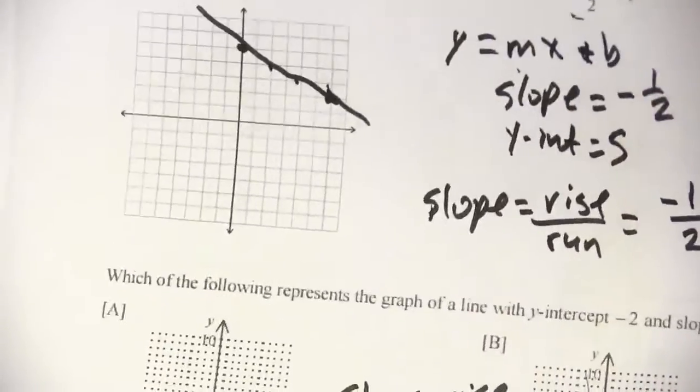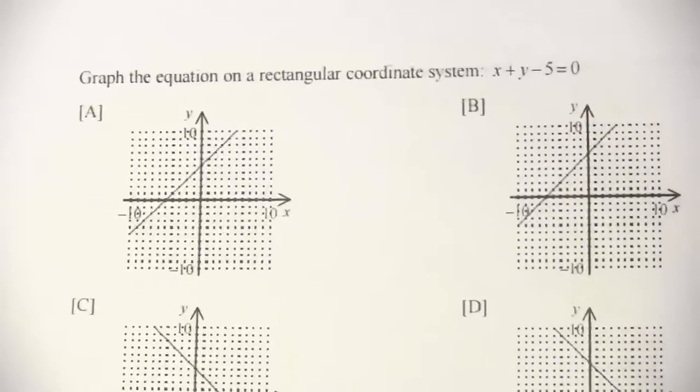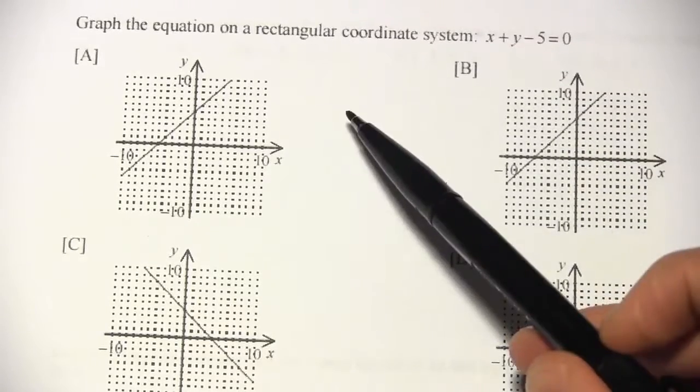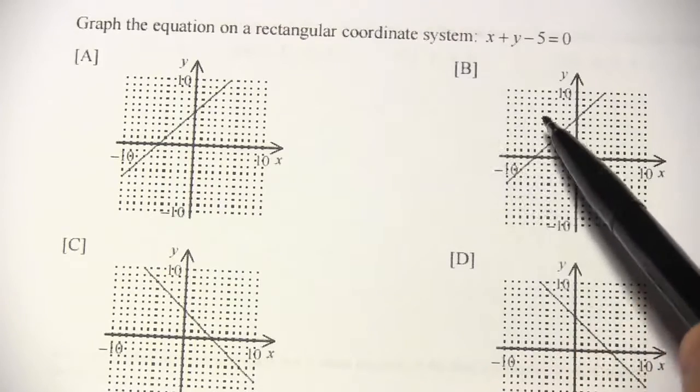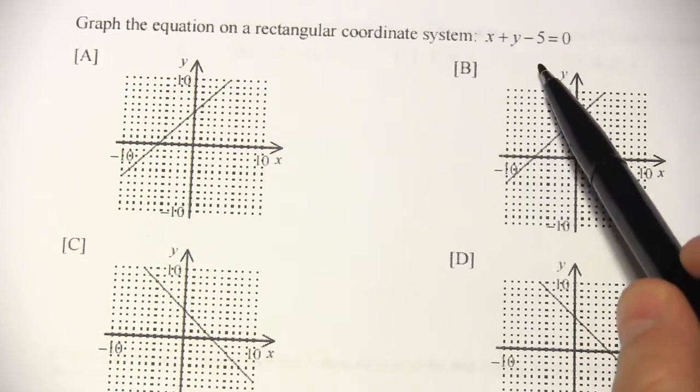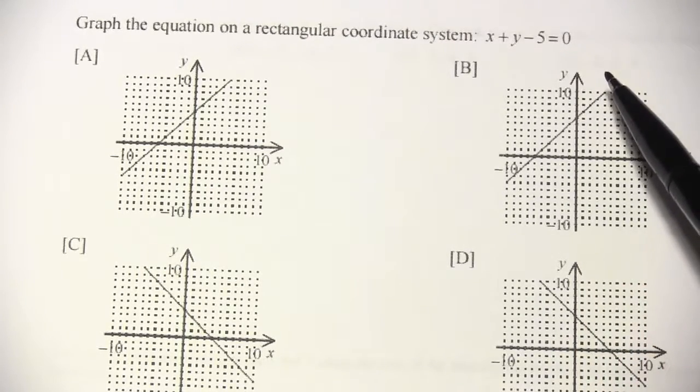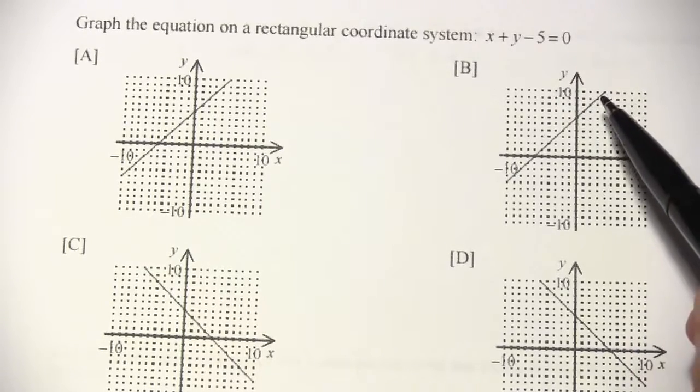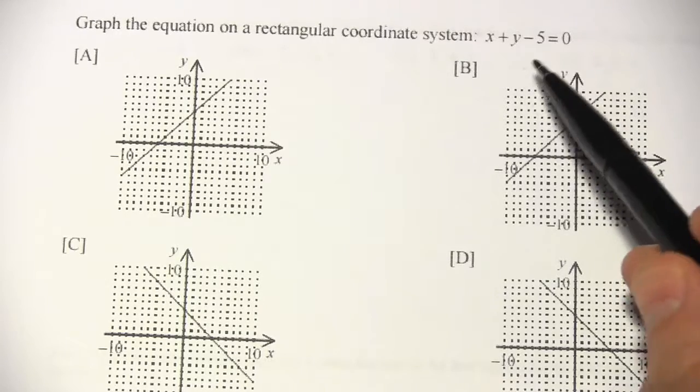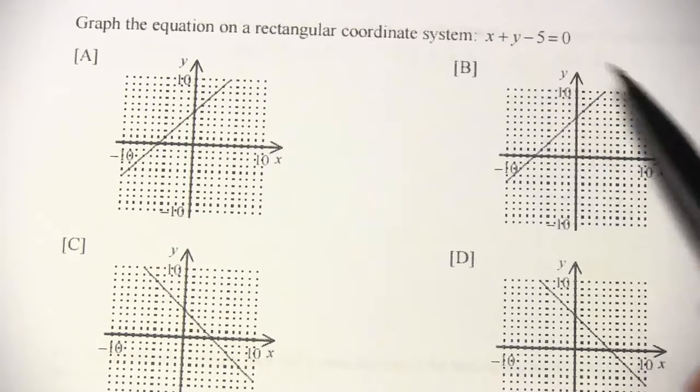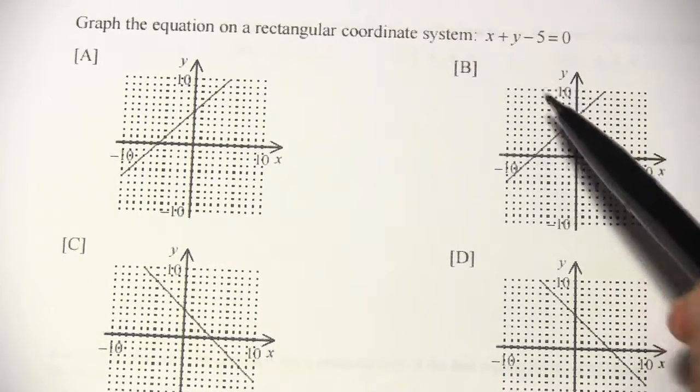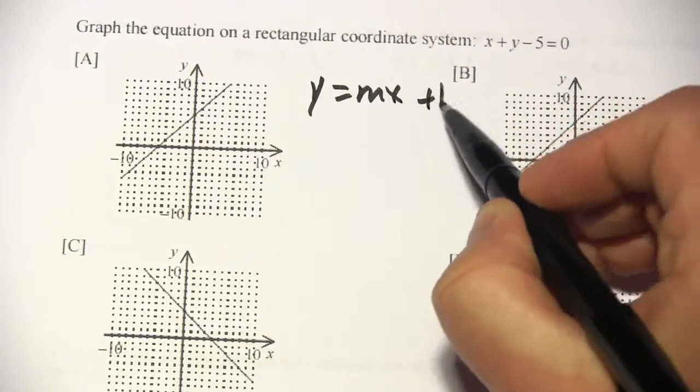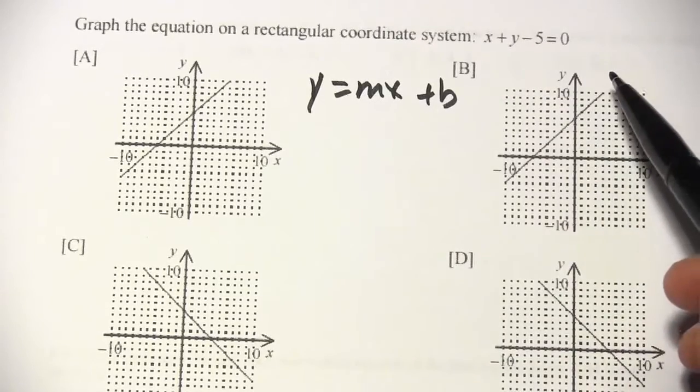Let's do one more. Okay, here it says graph the equation on a rectangular coordinate system, and we have x plus y minus 5 equals 0. How are we going to graph that? It's not in slope-intercept form, which is the way I like to have them when I'm graphing things. But I can put it in slope-intercept form. Slope-intercept form has the y on one side, and all the other stuff on the other side. So let's just use algebra to do that.